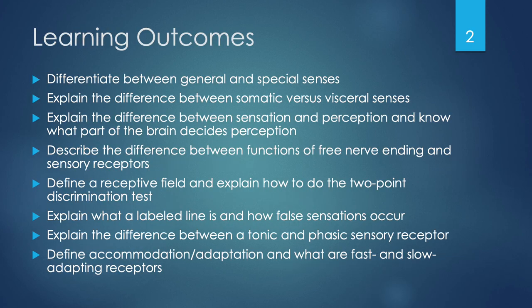The learning outcomes for today's lecture include: differentiating between general and special senses; explaining the difference between somatic versus visceral senses; explaining the difference between sensation and perception and knowing what part of the brain decides perception; describing the difference between functions of free nerve endings and sensory receptors; defining a receptive field and explaining how to do the two-point discrimination test; explaining what a labeled line is and how false sensations can occur; and explaining the difference between tonic and phasic sensory receptors, including accommodation and adaptation, and what fast and slow-adapting receptors are.